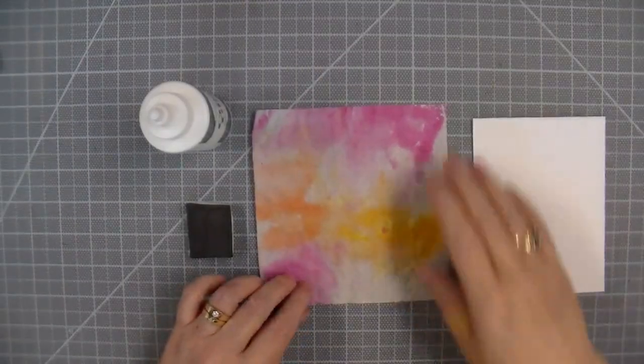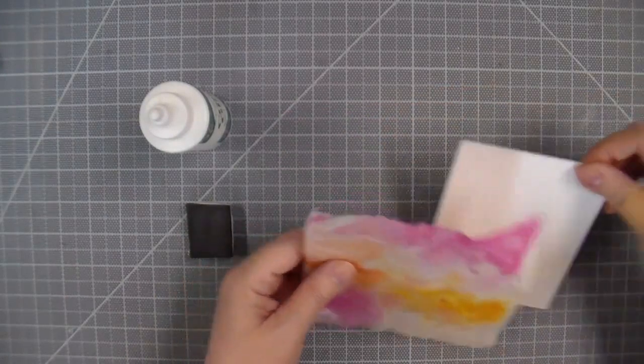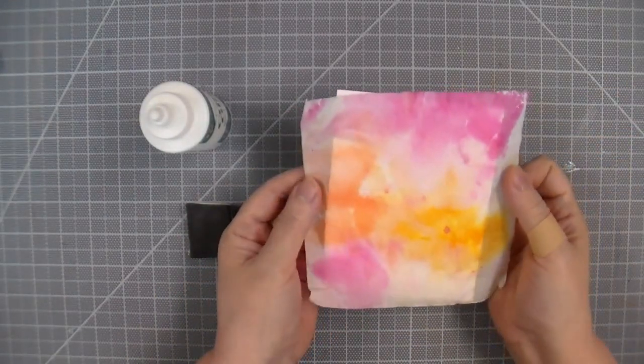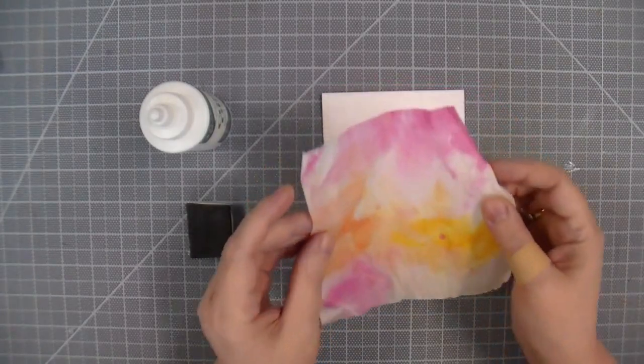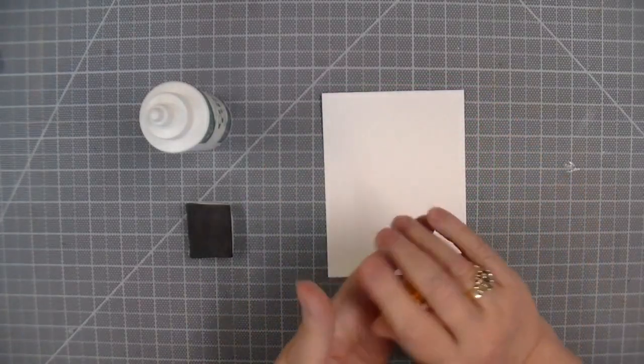The watercolored tissue paper dries in about 15 to 20 minutes, and then you can glue it directly onto a piece of white cardstock to create a watercolored background or for die cutting. But there's lots of other techniques that you can use with the tissue paper.